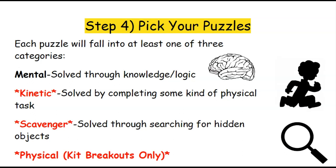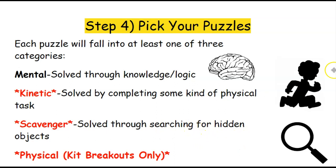Welcome to step four: pick your puzzles in our non-content puzzle design. Before we get into the different puzzle types, I want to familiarize you with some things you'll see on my slides. These pictures — the brain, the running boy, and the magnifying glass — each represent a certain type of puzzle. The brain represents mental puzzles solved through knowledge or logic. The running boy represents kinetic puzzles solved by completing a physical task. The magnifying glass represents scavenger puzzles solved by searching for hidden objects. The running boy and magnifying glass puzzles only work if you're designing a physical or kit breakout.